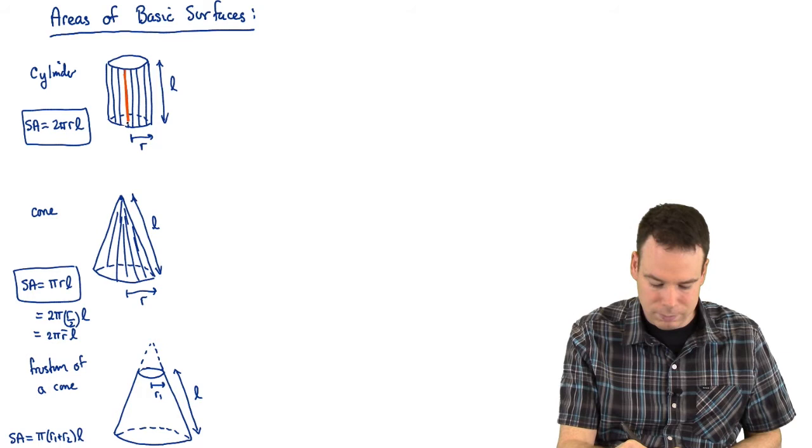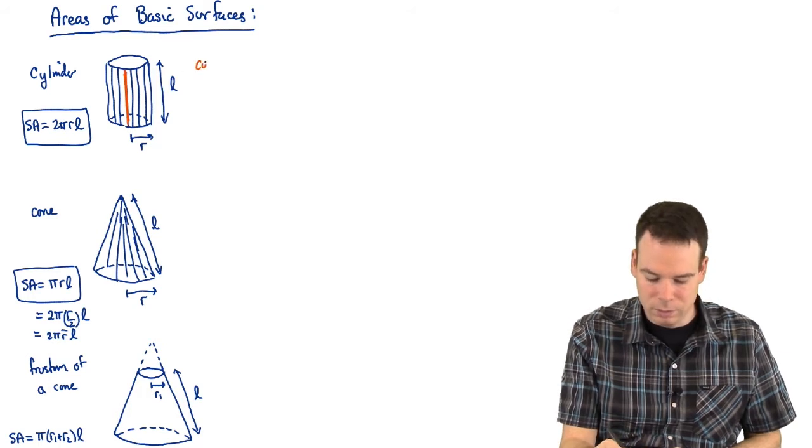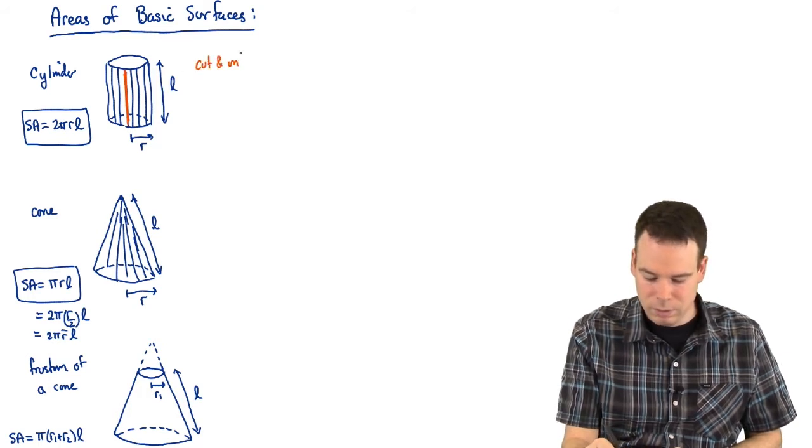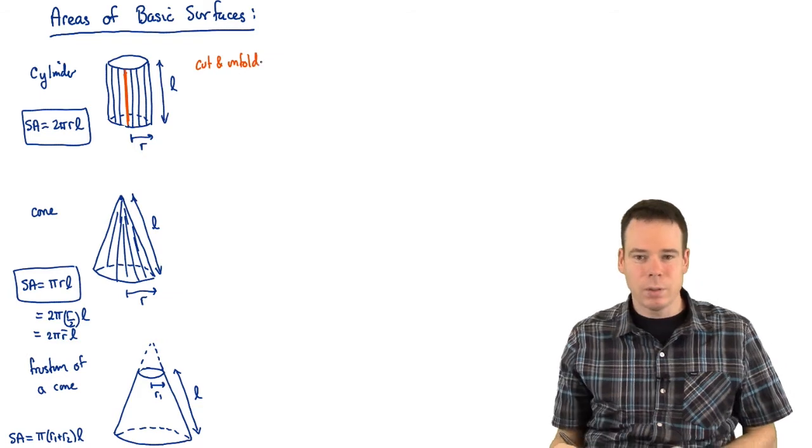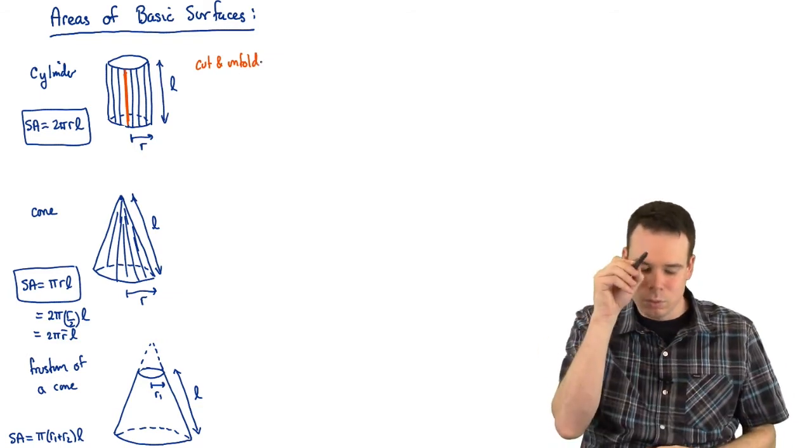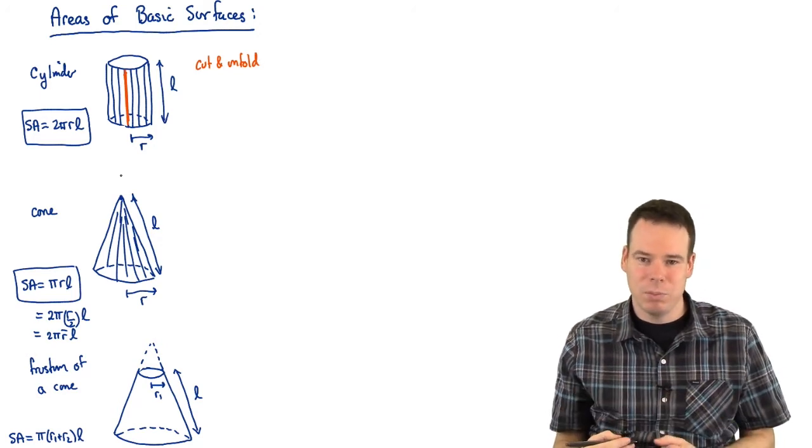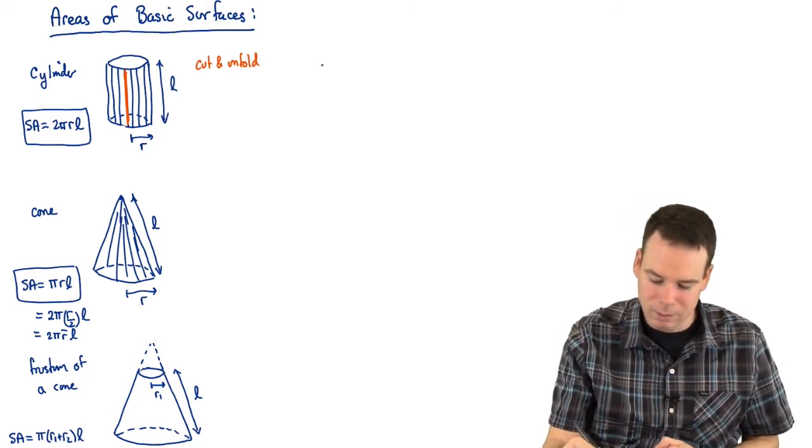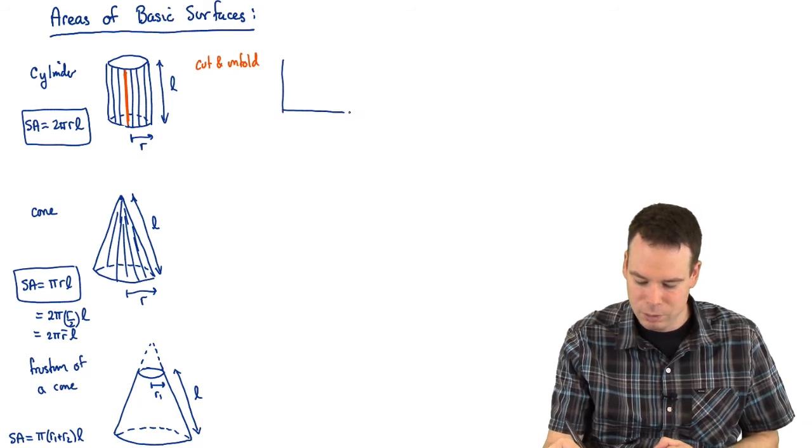For the cylinder I slice, I cut and unfold. What do I mean by this? Well imagine you've got a tin can like a food can and you've got a label wrapped around it. If you slice right down the label and unfold it, what shape is that? When you unfold it, it's a rectangle.